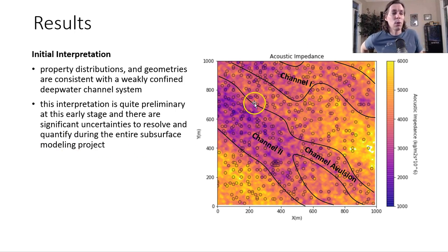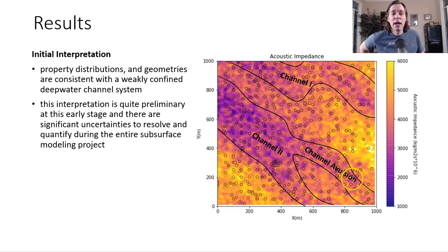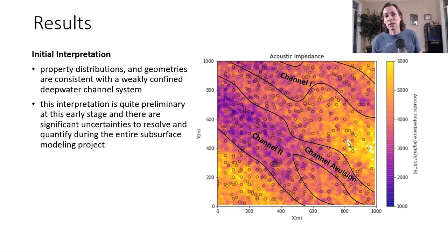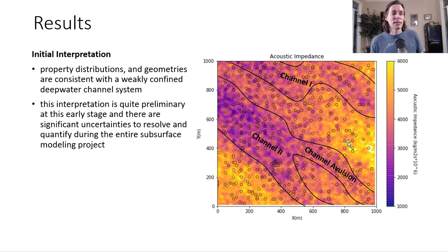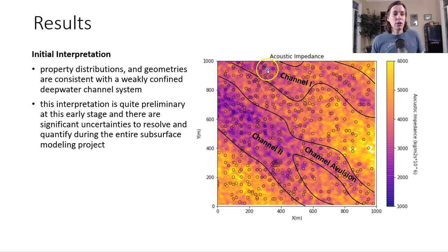Here is the map of acoustic impedance with all well acoustic impedance superimposed on top of it. What you can see is very interesting — there are channels of lower acoustic impedance surrounded by higher acoustic impedance regions. This could be sand-filled channels. The fact that they appear separated suggests some avulsions going on — perhaps a weakly confined deep water channel system. A larger seismic image would help start mapping the morphology of the actual slope valley, but at this point this does seem like a consistent story, though we could have alternative hypotheses.